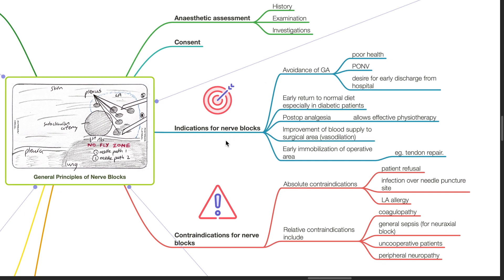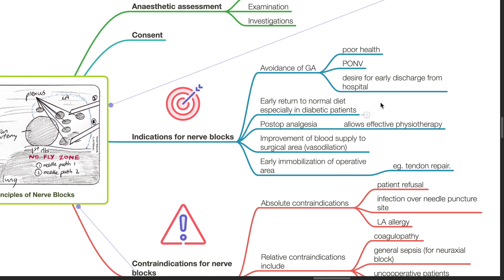Indications for nerve blocks include avoiding general anesthesia due to poor health, post-op nausea, vomiting, or desire for early discharge from hospital, early return to normal diet especially in diabetic patients, post-operative analgesia which allows effective physiotherapy, improvement of blood supply to the surgical area, and early immobilization of operative area such as tendon repair.